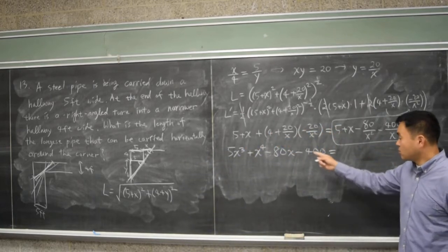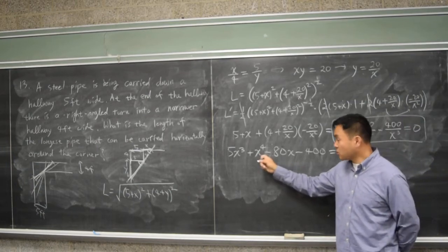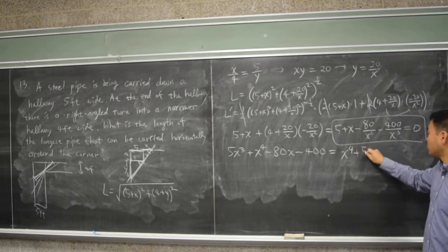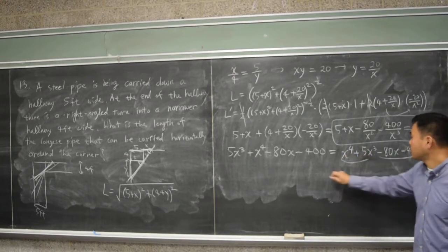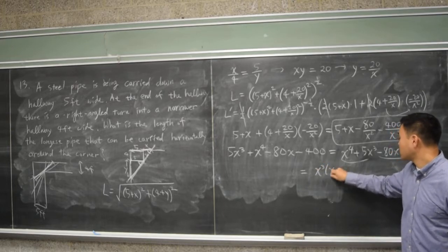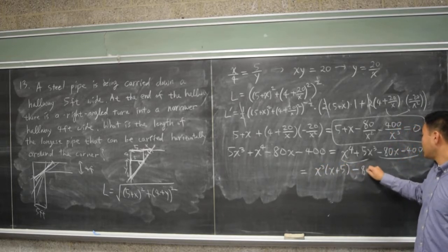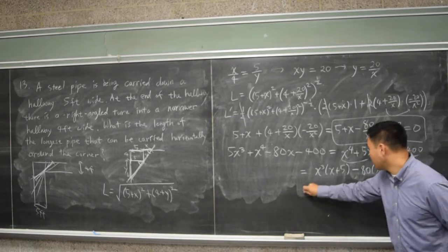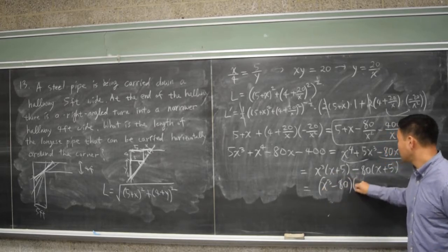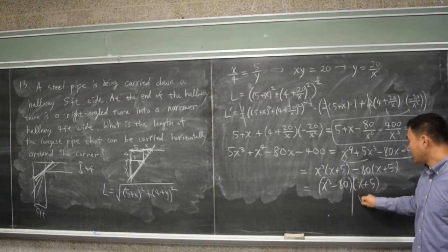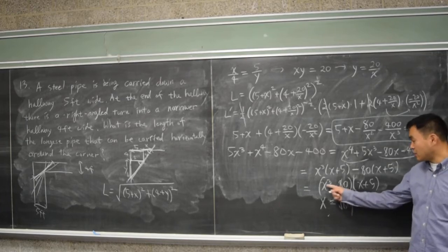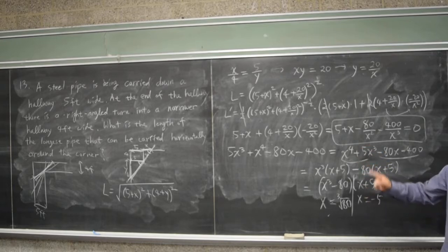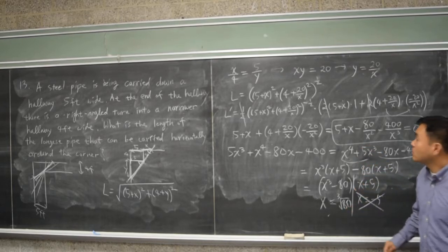Organize by order: x to the fourth plus five x cubed minus eighty x minus four hundred. Factoring by grouping: x cubed times x plus five, minus eighty times x plus five. So it factors as x plus five times x cubed minus eighty, and setting x cubed equals eighty gives what we need.